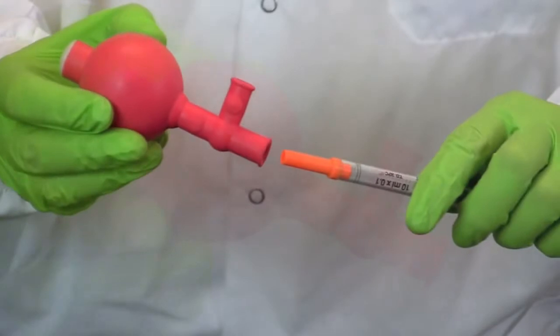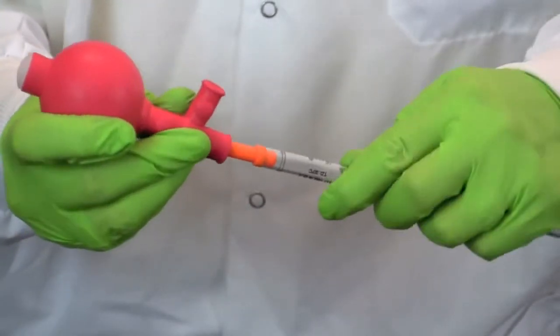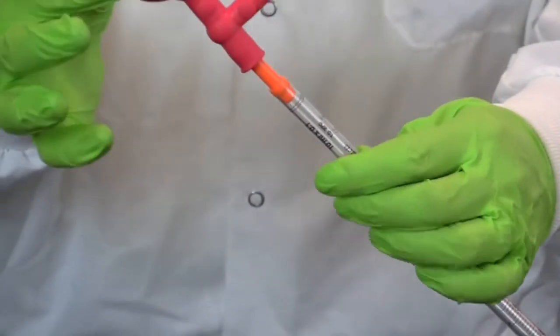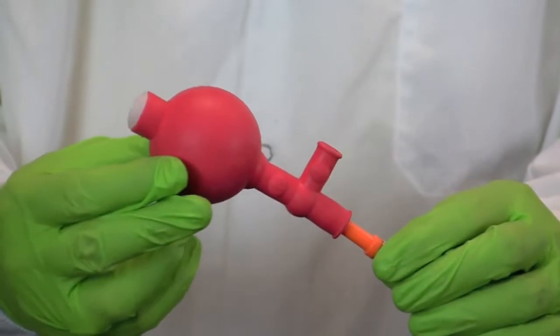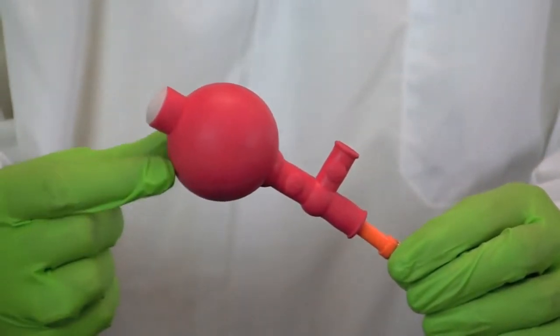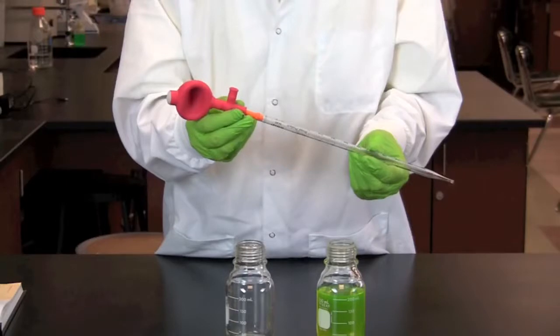To use a tri-valve pump, attach the pump to a serological pipette by twisting the top of the pipette into the bottom of the bulb. To fill the pipette, gently squeeze the bulb to release air through the one-way air valve.